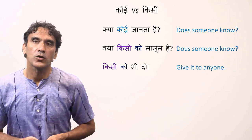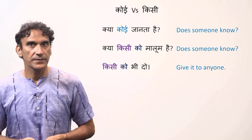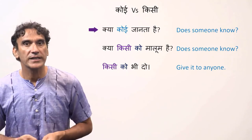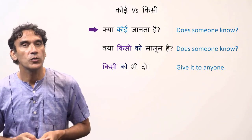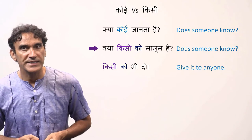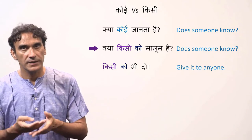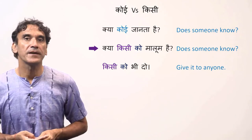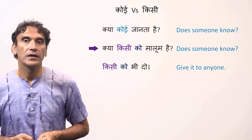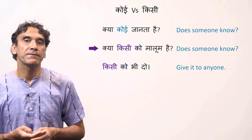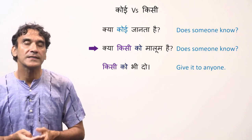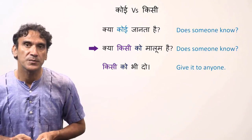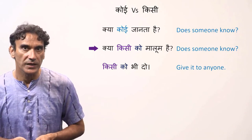Let's first compare koi with kisi. Kya koi jaanta hai? — Does someone know? Kya kisi ko maalum hai? — Does someone know? We know that with the phrase maalum hona, the subject takes the postposition ko.